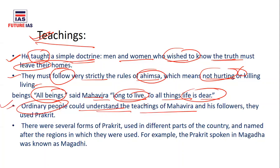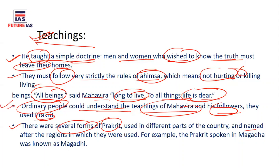To make their teachings accessible, Mahavira and his followers used Prakrit — the language of ordinary people — just like Gautam Buddha. There were several forms of Prakrit spoken in different parts of the country, named after their regions. For example, the Prakrit spoken in the Magadha area is known as Magadhi. So Magadhi is not a different language but a regional variant of Prakrit.